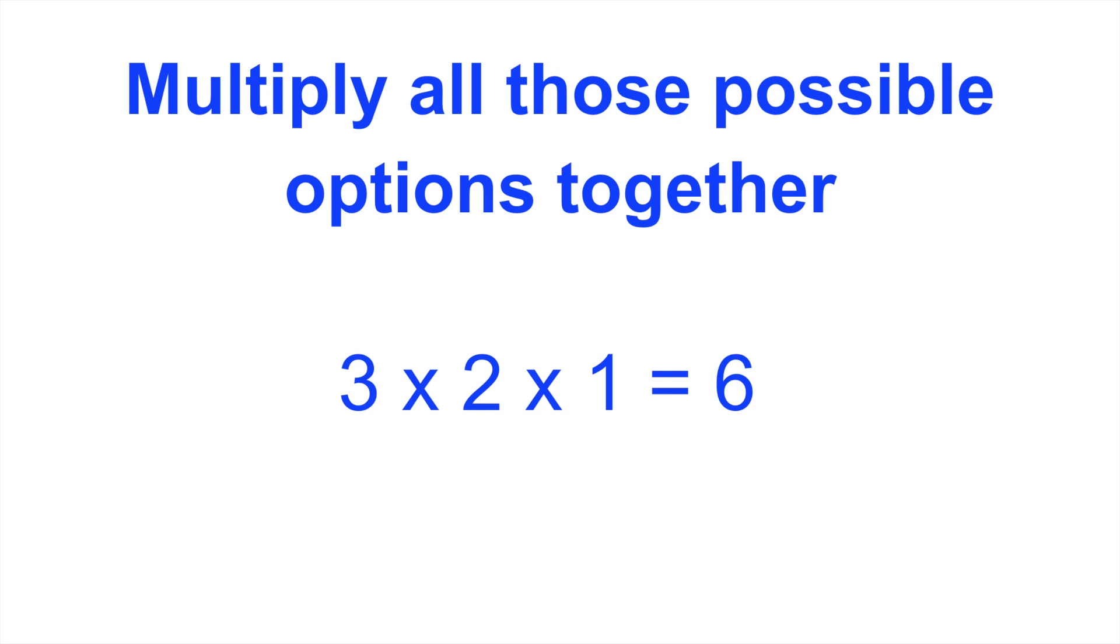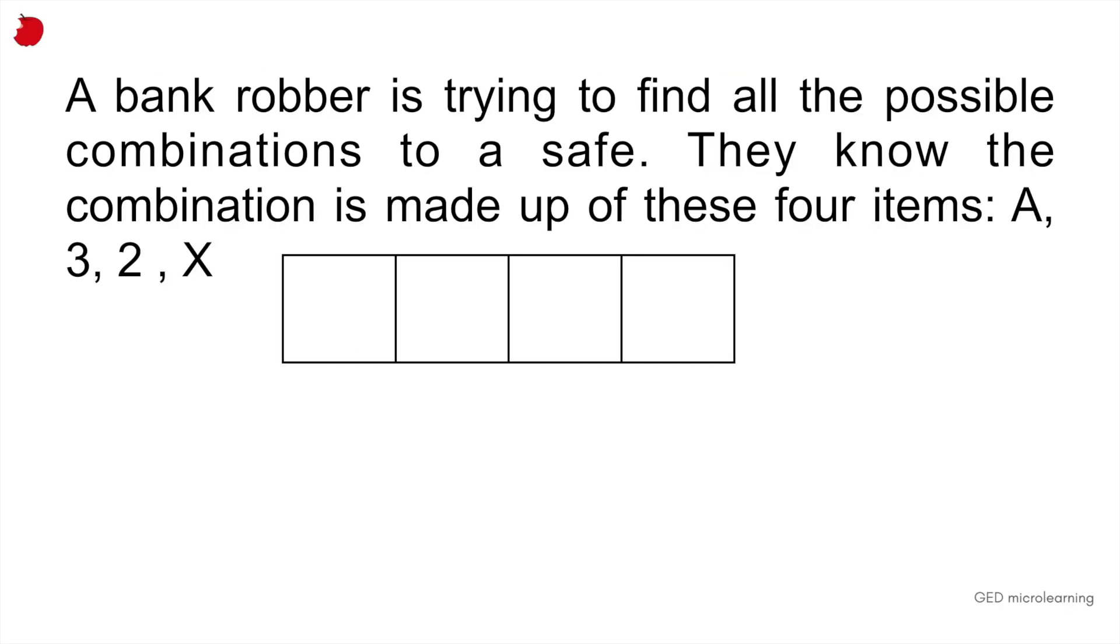So this is an example of a permutation. Now, if we go back to our question and we approach it in the same way, let's think about the safe combination as this four slot system. So they could either put the letters first, or they could put the numbers first, or they can mix them up together. So let's take that calendar approach that we said before. And we said, they say that now at the beginning, the robber has four options, right? So they can place whatever number or letter in wherever slot in that safe combination.